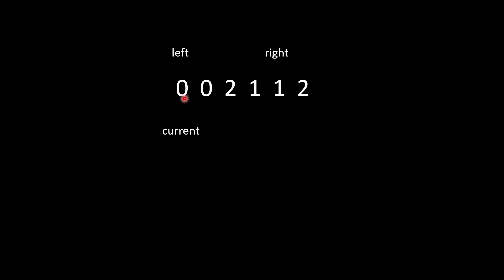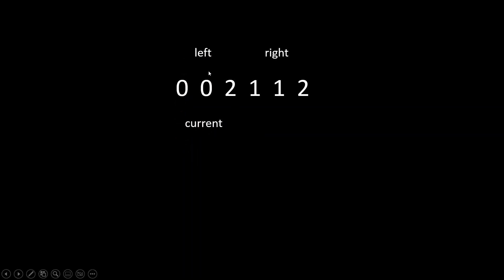Starting the walkthrough: first we get a 2, so we swap the current pointer value with the right pointer value, then decrement the right pointer by one. Next, the current pointer points to a 0, so we swap the current and left pointer values — in this case the same element, so zero stays zero — then increment both left and current pointers by one.